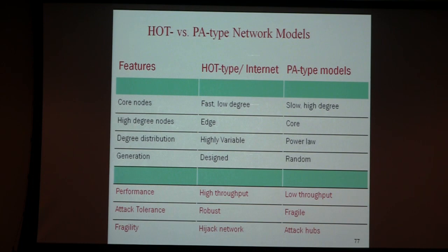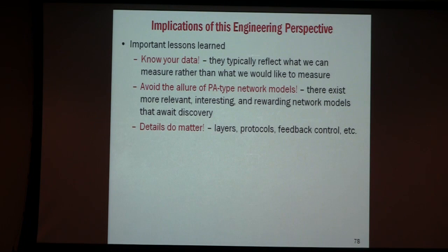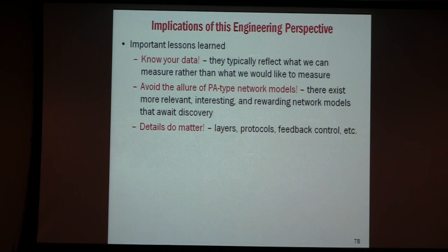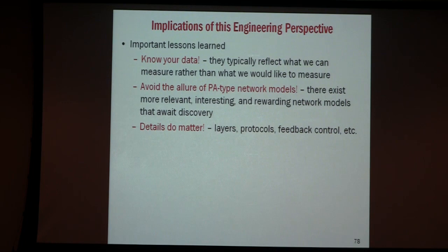Know your data — I have to keep repeating that message. Preferential attachment and scale-free models have enormous appeal because they are simple; you don't need to know anything about the domain to say 'this graph is scale-free.' But don't be fooled by the appeal, because in general it gives you the wrong way of doing things. From a networking or engineering perspective, take all the courses that give you details about the network — protocols, feedback, architecture. These things have to be reflected in your model, because if they are not, you are not dealing with the real system. Network vulnerability is much more complex than knocking out nodes — knocking out nodes is probably the least effective way to destroy a network. If you want to destroy a network, misuse the protocols.